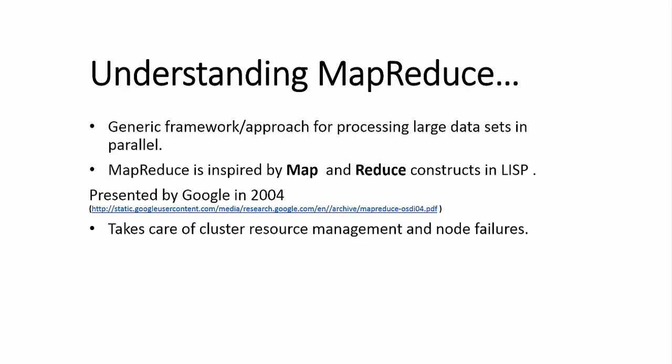MapReduce works by breaking the processing into two phases: map phase and reduce phase. Each phase has key-value pairs as input and output, the types of which may be chosen by the programmer. The term MapReduce comes from the two fundamental data transformation operations used: map and reduce.